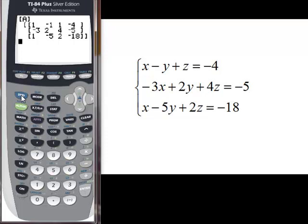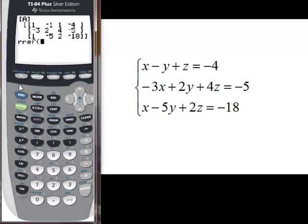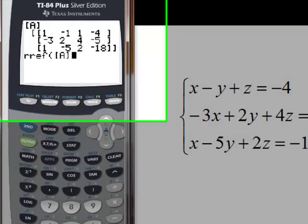What I want to do is row reduced echelon form on A, so I do second matrix, I'm going to do math, and I'm going to go to row reduced echelon form RREF, enter. I'm going to put in my matrix A and hit enter.